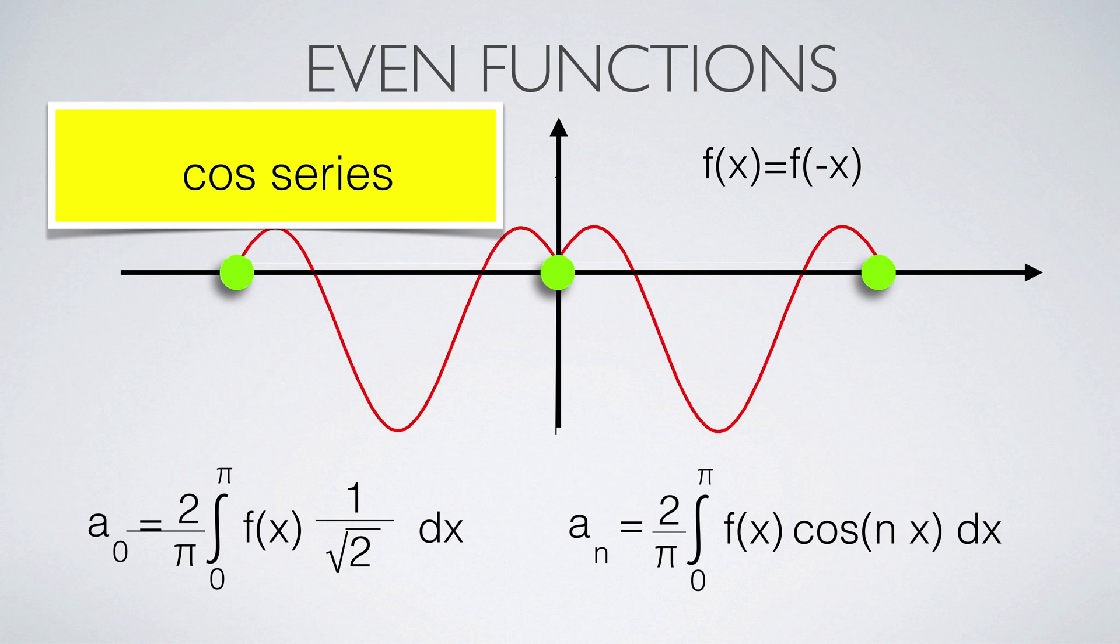Functions which are symmetric with respect to the y-axis are called even. For such functions, only the cosine and constant part of the Fourier series matter. In this case we can integrate from 0 to π and multiply by 2.